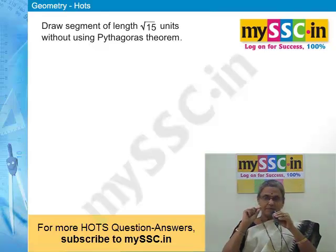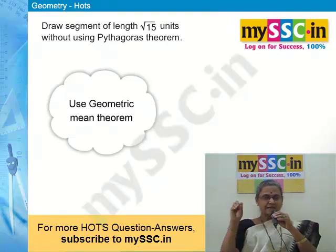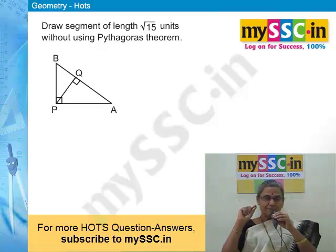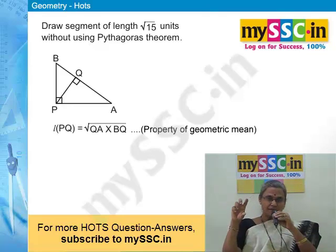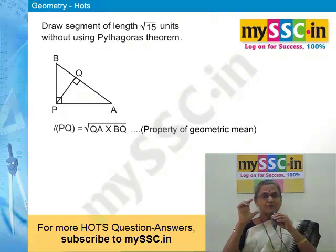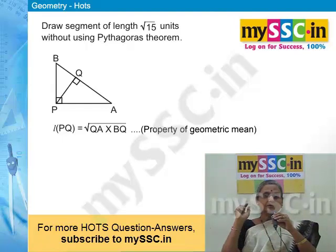You have learned Pythagoras theorem — but do you remember the geometric mean theorem within it? In a right-angle triangle, if you draw a perpendicular to the hypotenuse from the vertex at the right angle, you get two parts of the hypotenuse. The square root of the product of these two parts gives the length of that perpendicular on the hypotenuse. This is the geometric mean theorem, and you can use this geometric mean property here.